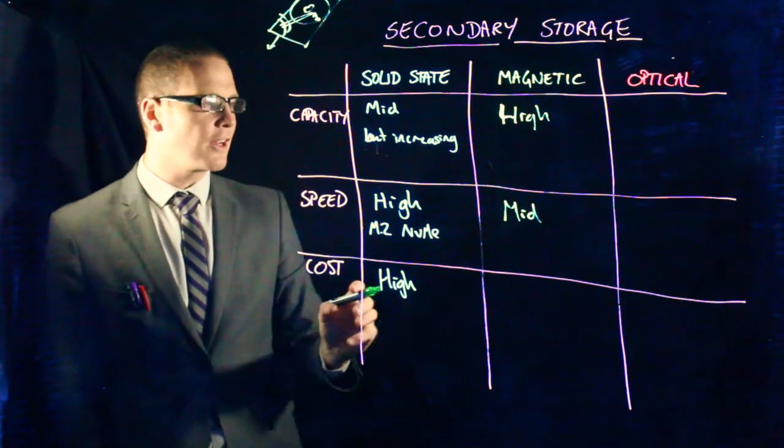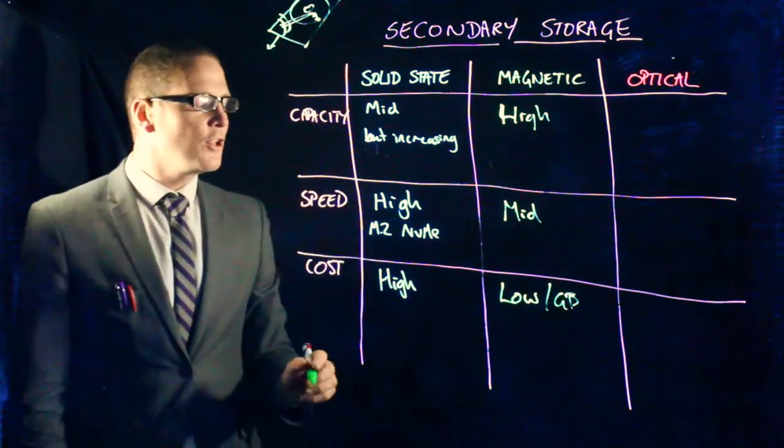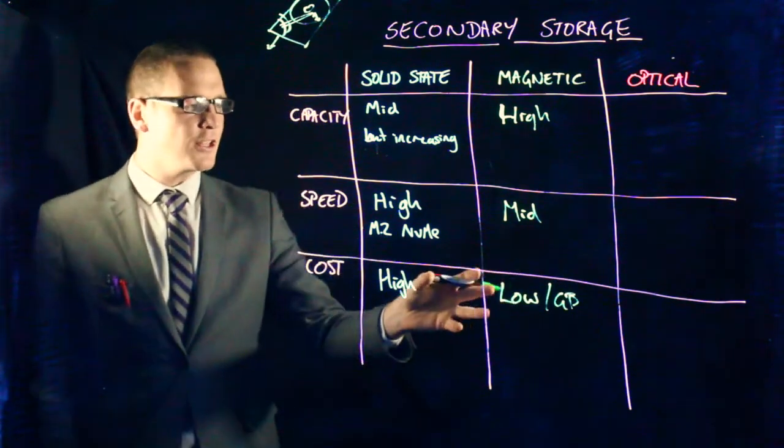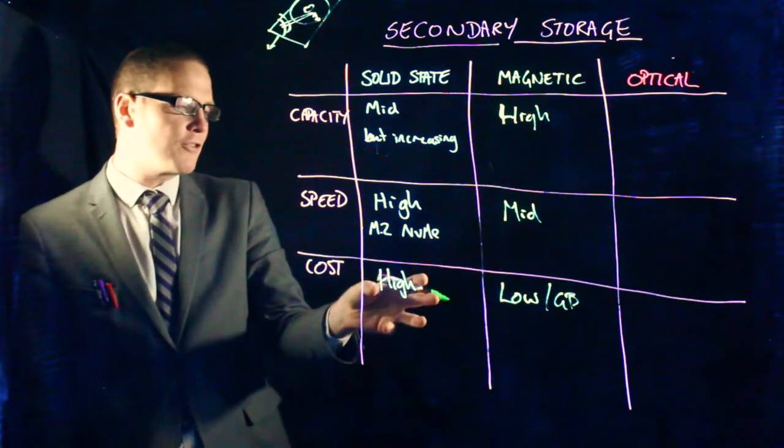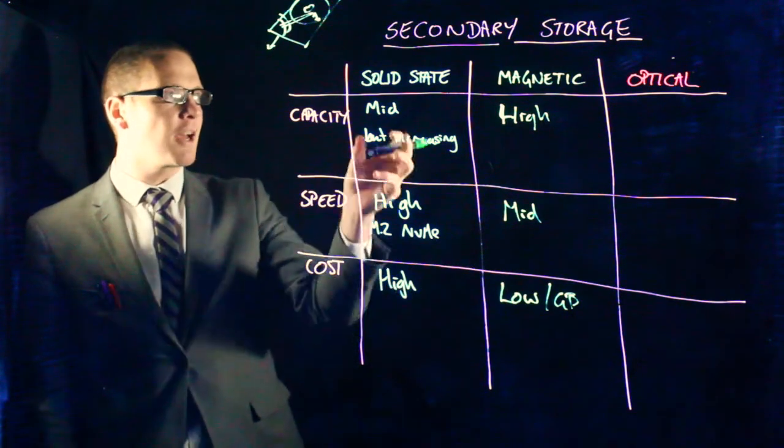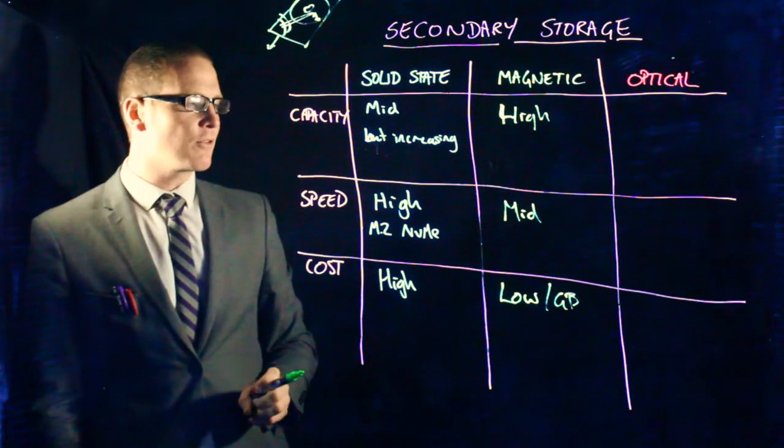The cost, however, is, as I said, low per gigabyte. You can get for about 30 pounds, maybe 120 gigabyte solid state drive, but for 30 pounds, you'd be easily getting a terabyte disc drive.